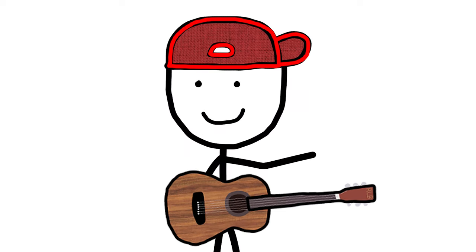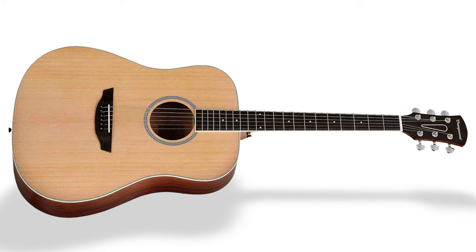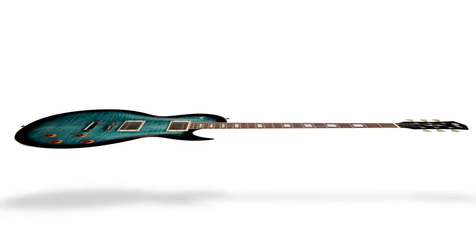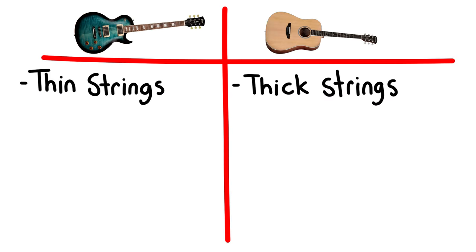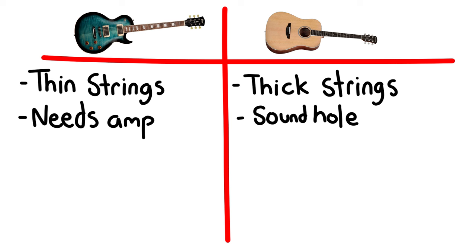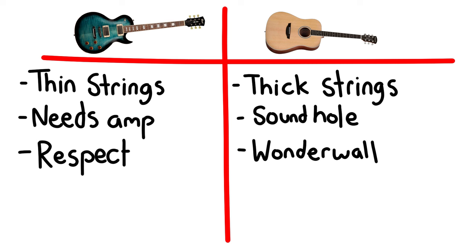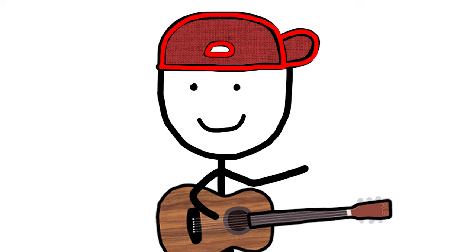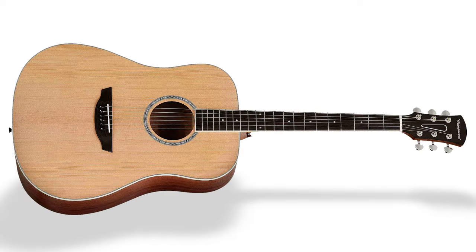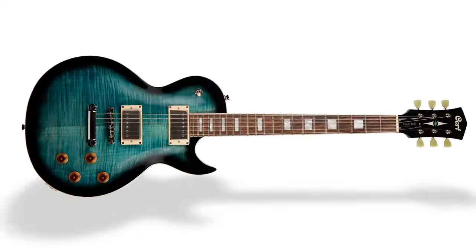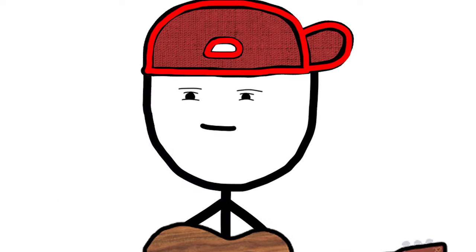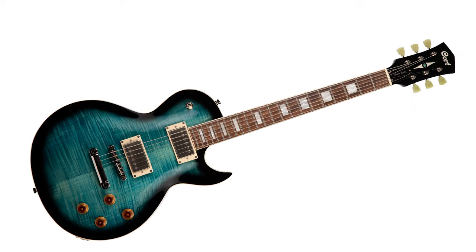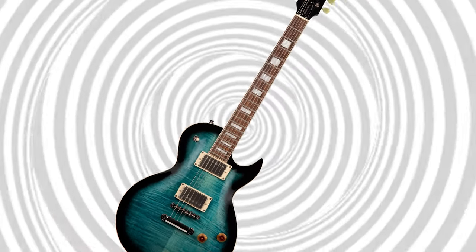Everybody knows the basic differences between an acoustic and an electric. The strings are thinner, it needs an amp, people respect you more. But to really understand the difference between the acoustic and the electric, you need to imagine a time before the electric guitar existed.